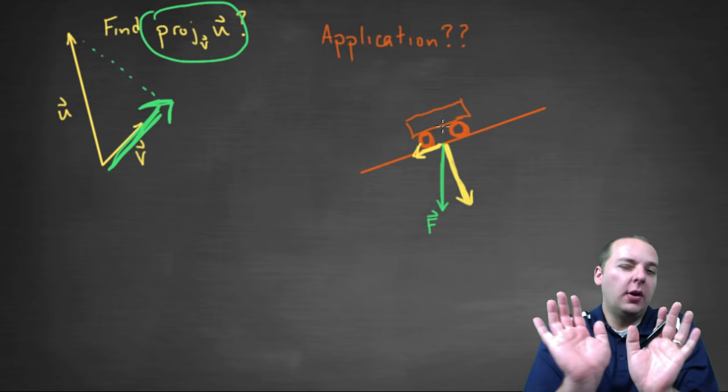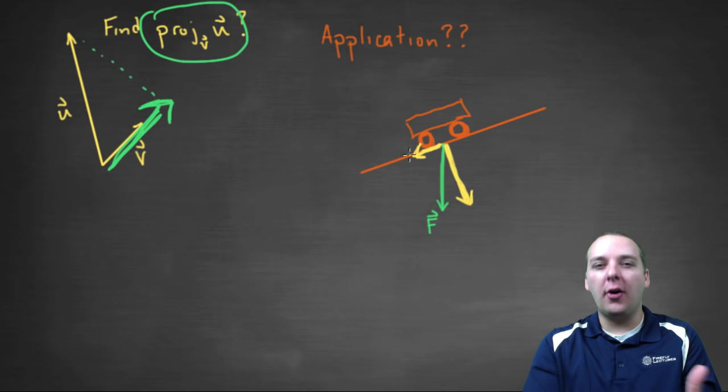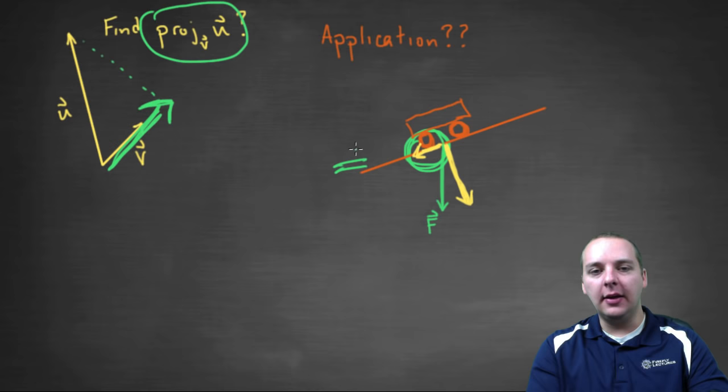The steeper the hill, yeah, the harder it would be, but the flatter the angle, the easier it will be. So what's happening is this force vector, if you project it onto the hill, like if you have a vector here that's in the same slope as the hill, then you're just getting part of the force. So notice, however long this vector is, that's how much force you're going to have to apply in the other direction to hold it onto the hill.